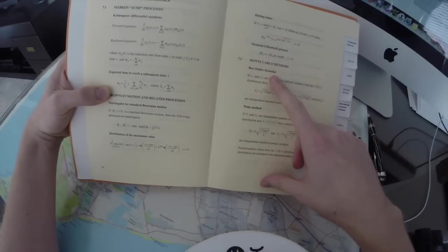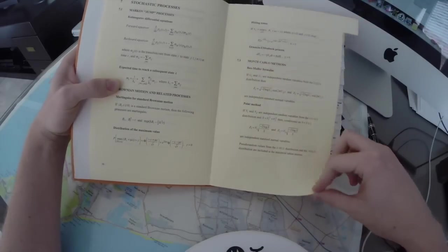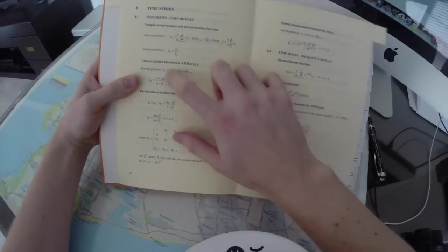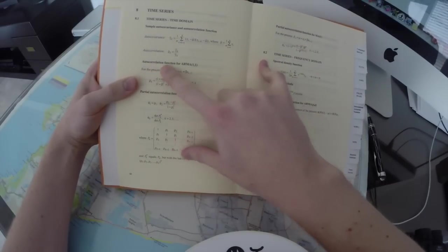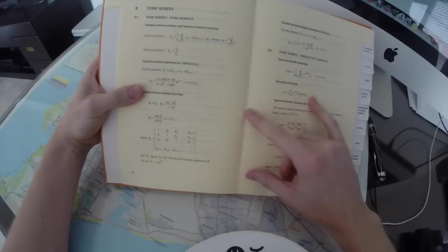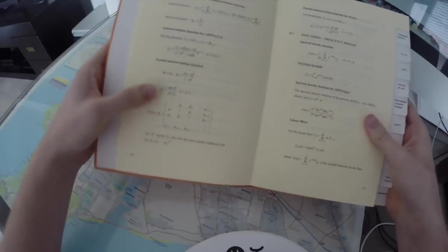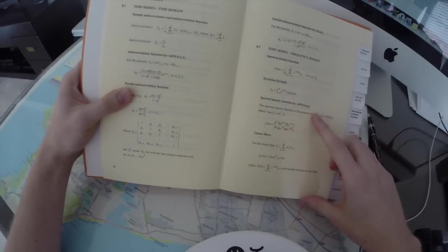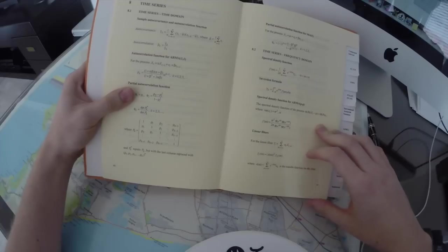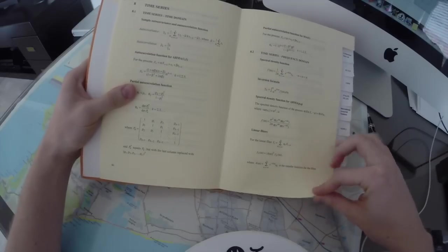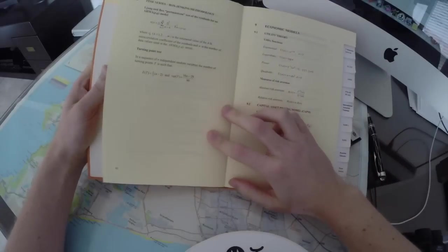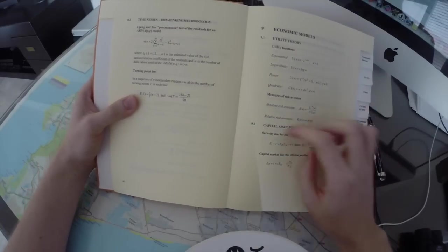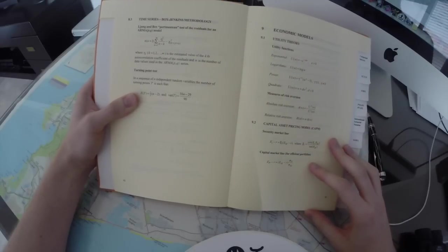Monte Carlo methods, Box-Muller, Polar method, then we've got the time series, these things you can use to predict the future, so they're worth knowing, like the autocorrelation functions, partial autocorrelation functions, you see you need to know matrices, then there's also time series frequency domains, such as spectral density functions, the inversion formula, linear filters. So you do need to know some sort of mathematics when you take on this profession, then there's the Box-Jenkins methodology, the turning point test.